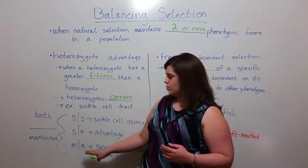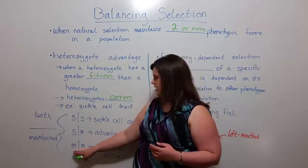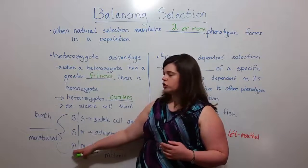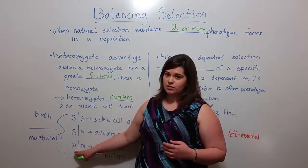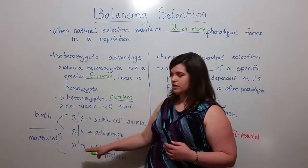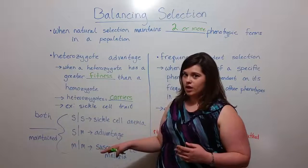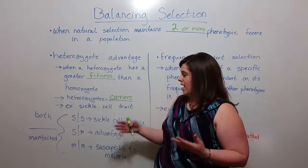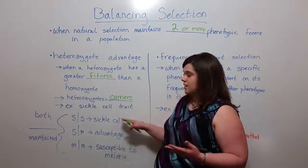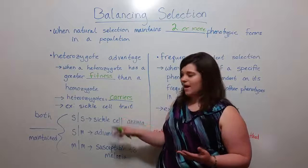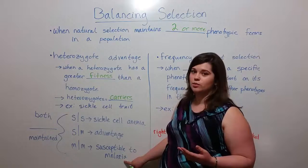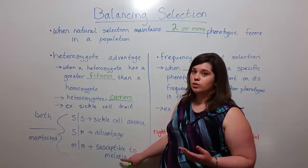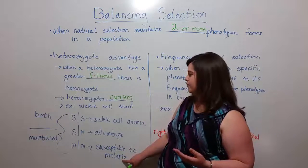The other type of homozygote is when they have two non-sickle cell trait alleles. They don't have sickle cell anemia, but they tend to be pretty susceptible to malaria.